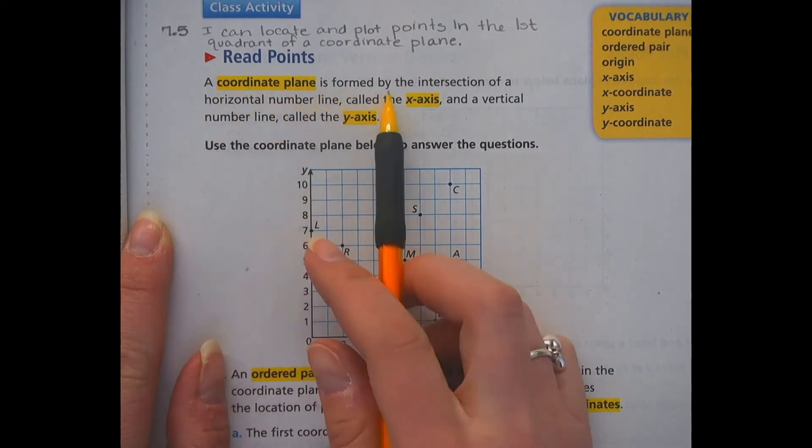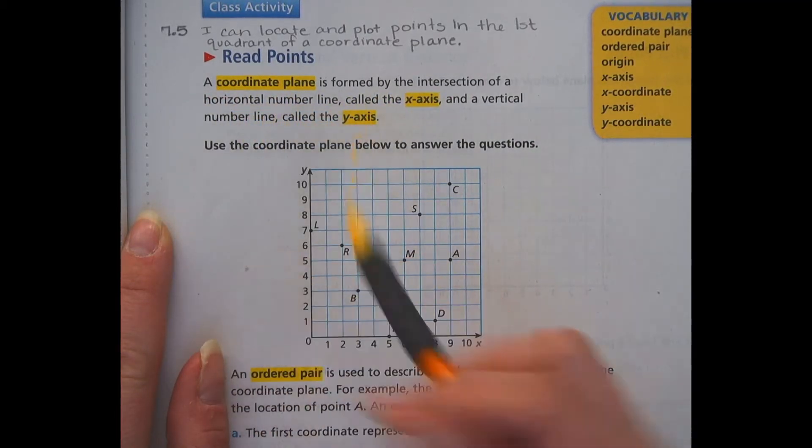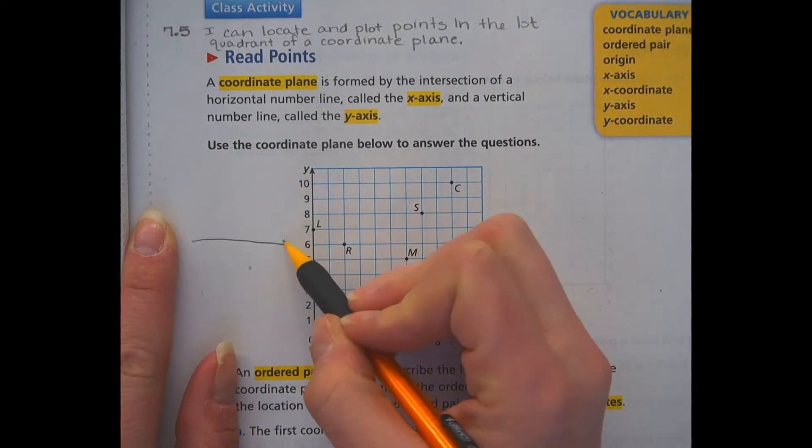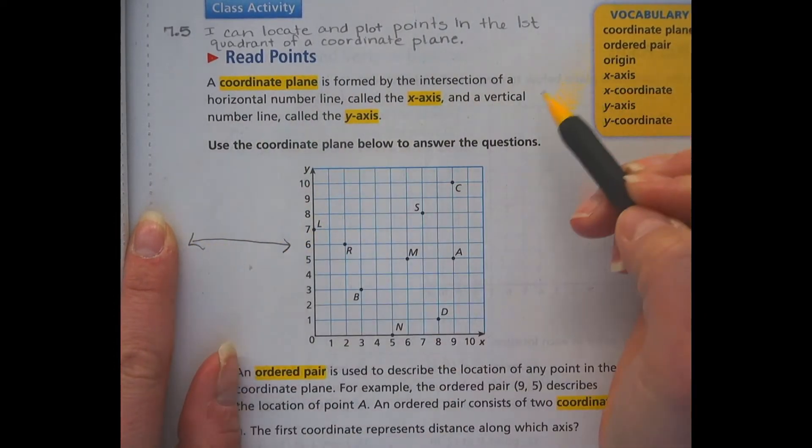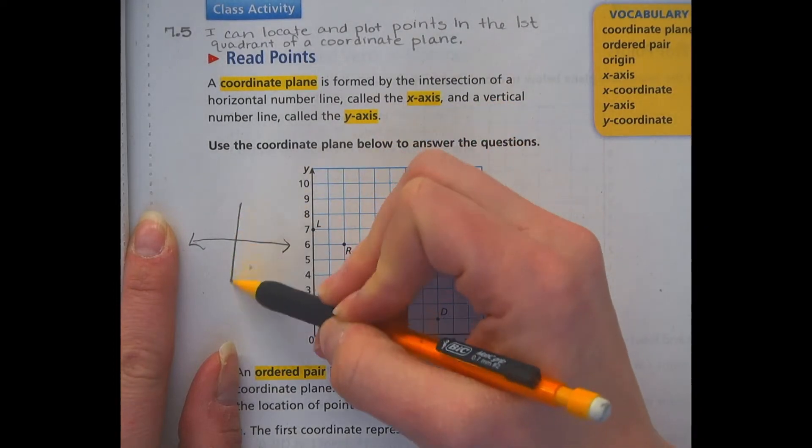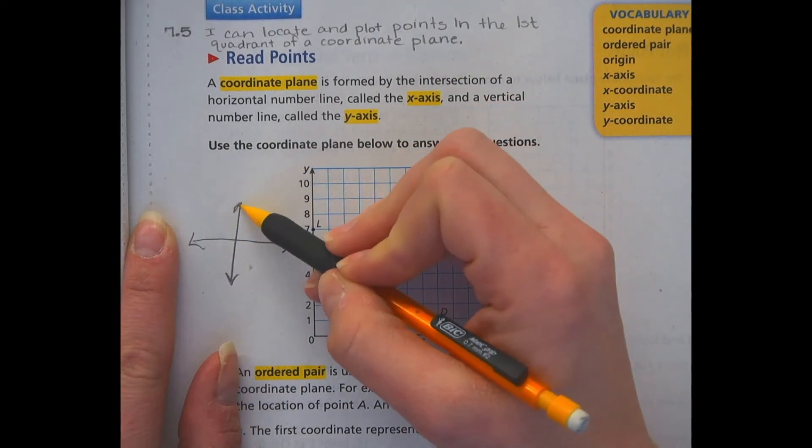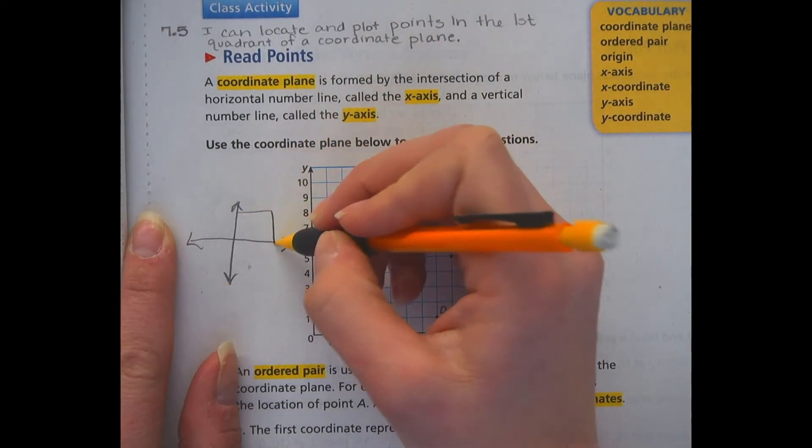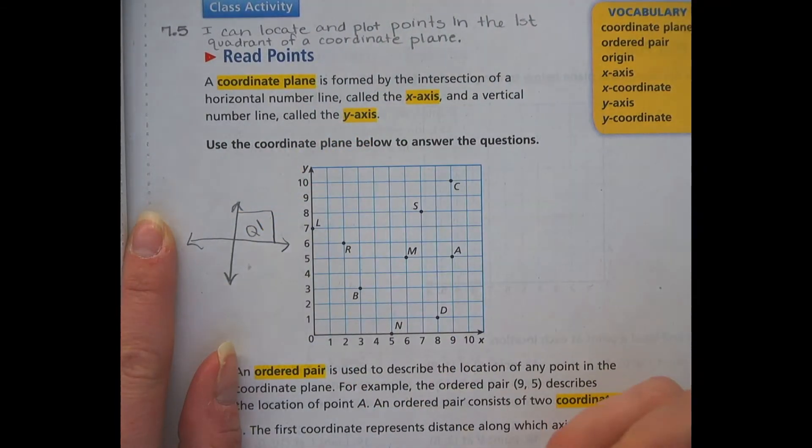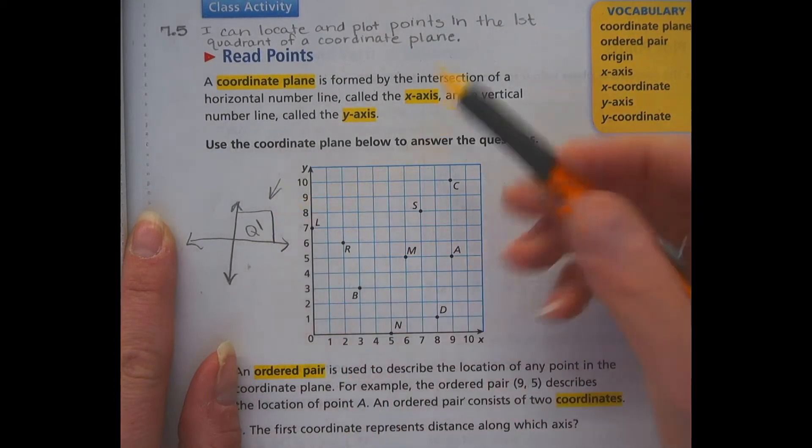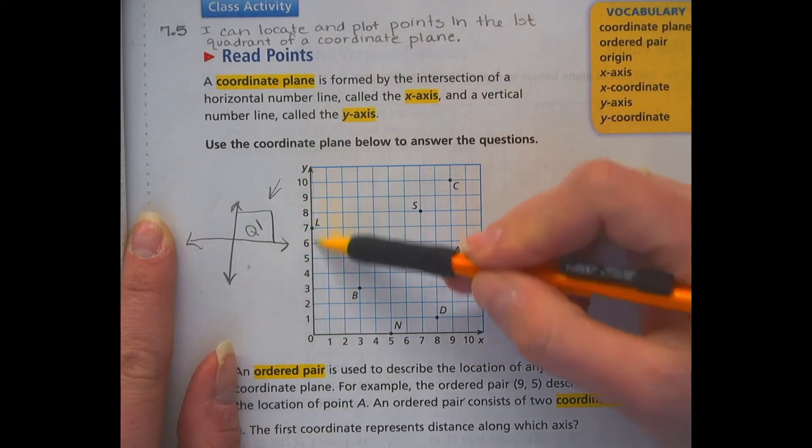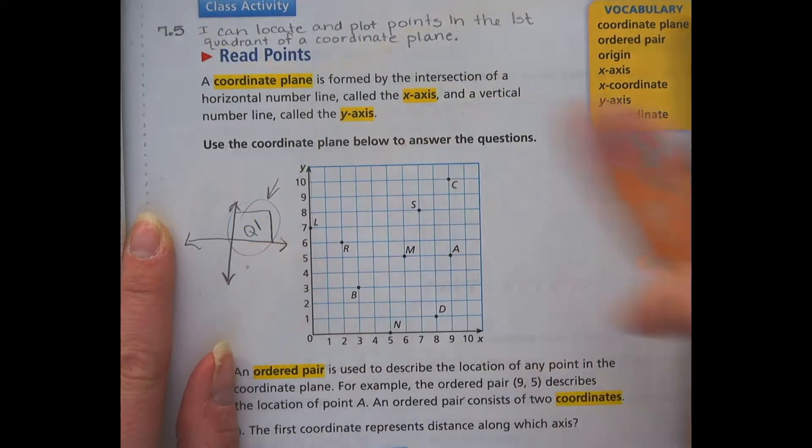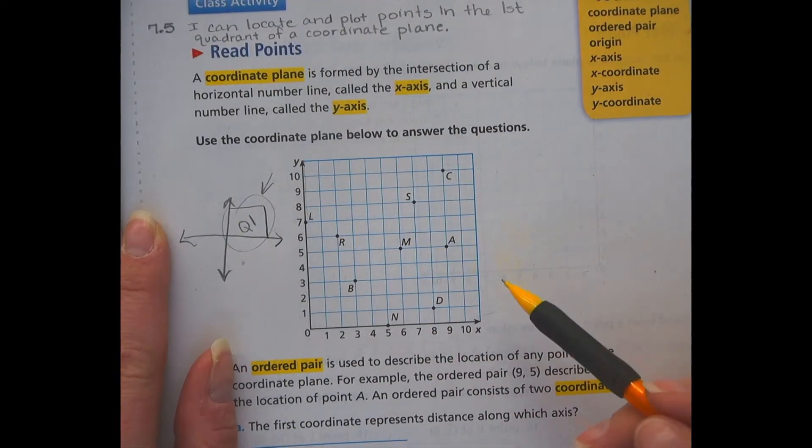A coordinate plane is formed by the intersection of a horizontal line called the x-axis and the vertical line called the y-axis. So that is a coordinate plane right here. This part right here is the first quadrant, where it said quadrant 1. This is what we're going to be focusing on. So over here, if you see, it's got the x and the y. We took this part and made it really big. So that's what we're talking about when we're talking about the coordinates.